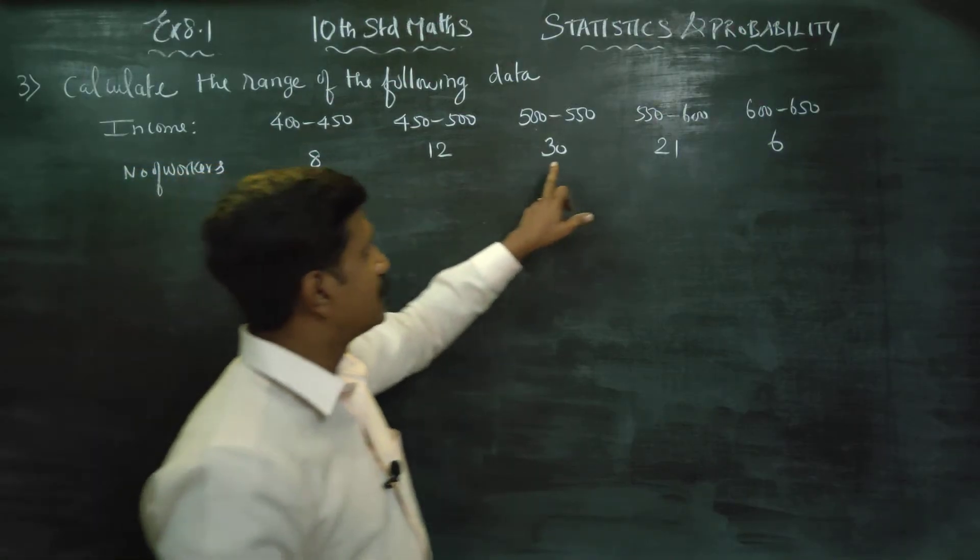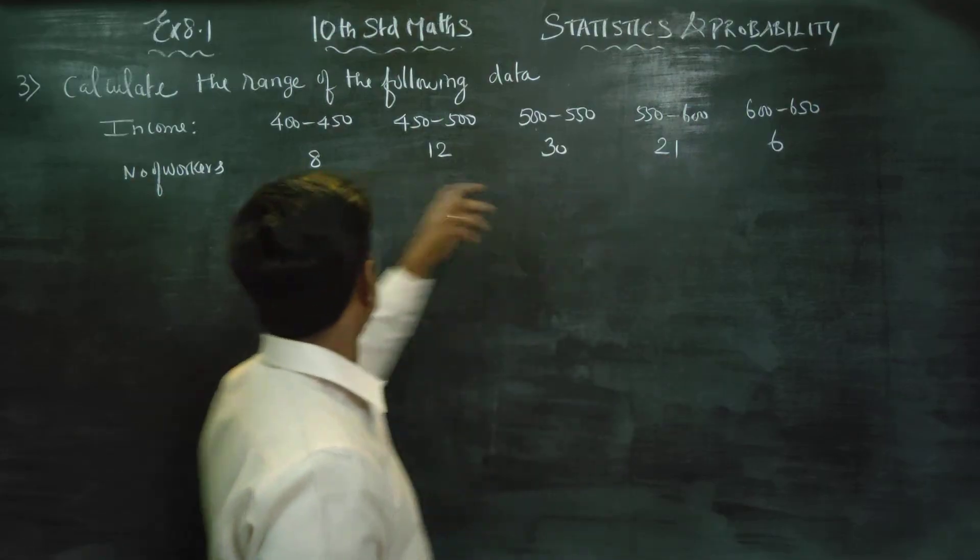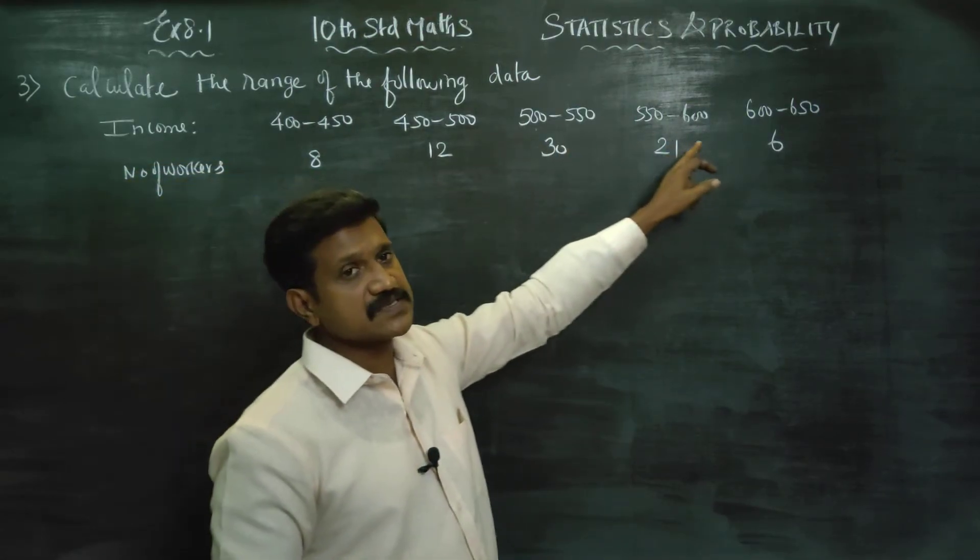8, 12, 30, 21, 5. Workers earning 550 to 600 salary.